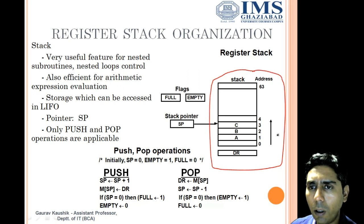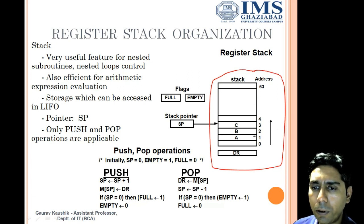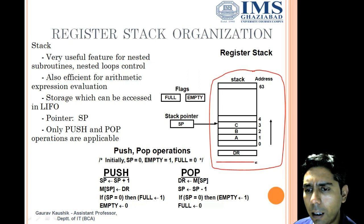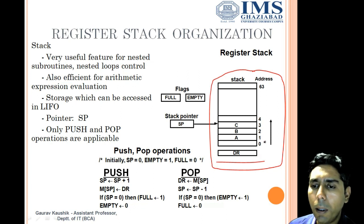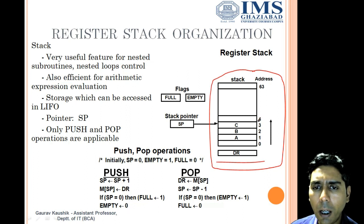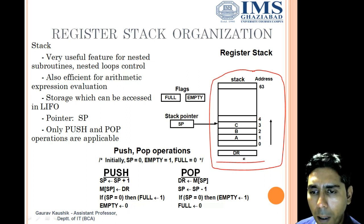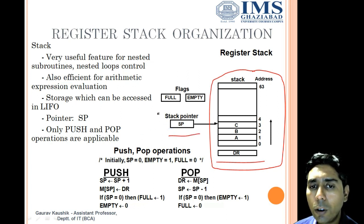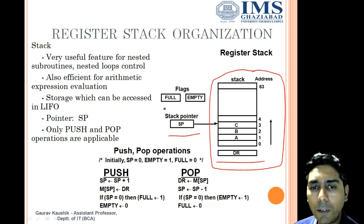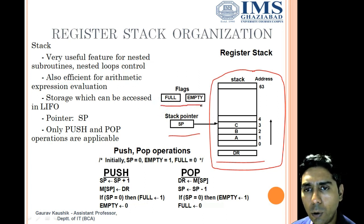These are certain general purpose registers. DR is the data register — a special purpose register through which elements will be pushed or popped from the stack. SP is the stack pointer, another special purpose register which holds the top position of the stack where push or pop operations need to be performed.